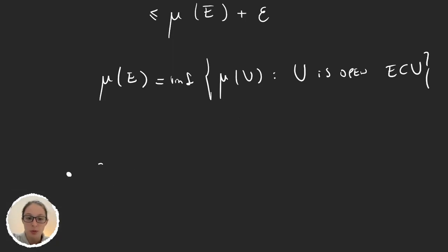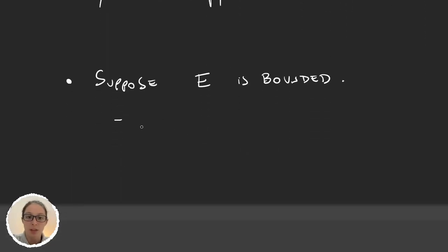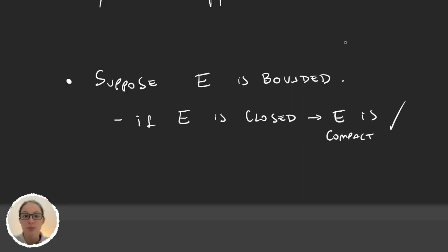First, we will suppose that E is bounded. If E is closed, then E is compact, because we are in the real numbers and in the real numbers bounded and closed implies compact. So in that case we have finished — the proof is done. So what happens when E is not closed?